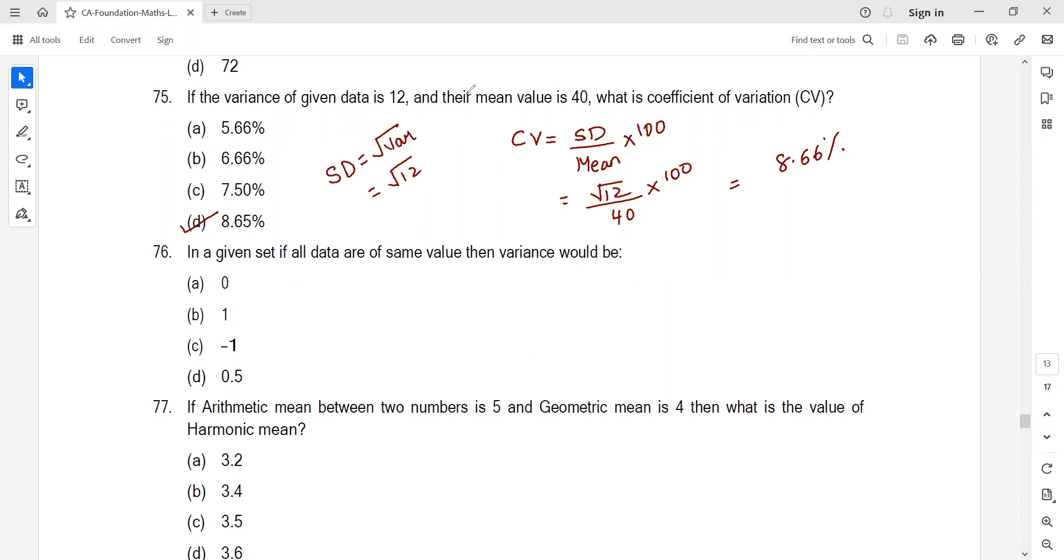In a given set, if all data are of the same value, then the variance is zero. We learned standard deviation is zero, so variance is also zero. Option A.